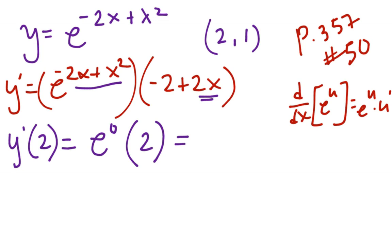Times negative 2 plus 4 gives me 2. So, what do I have? 1 times 2. Slope is equal to 2. So, I have a slope and I have a point.